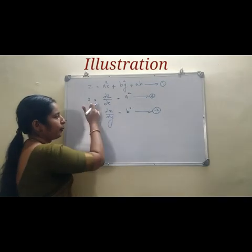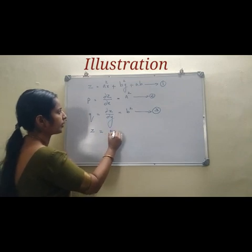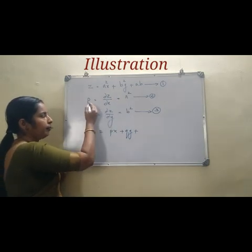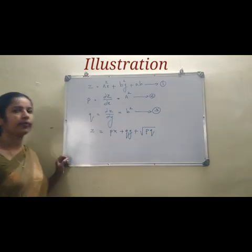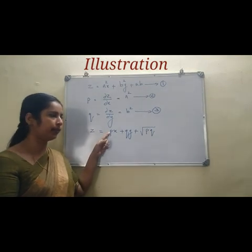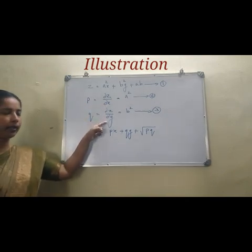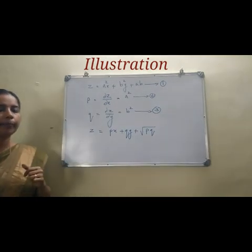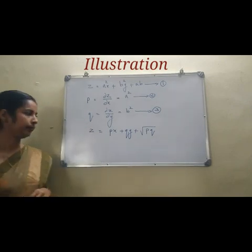Since a² = p and b² = q, what is z? z = px + qy + ab, where a = √p, b = √q, so ab = √(pq). See, it is an equation which contains the partial derivatives p and q, where p = dou z by dou x and q = dou z by dou y. So it is a partial differential equation, which is our required partial differential equation.